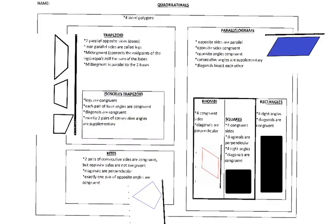Hopefully you've studied the different types of quadrilaterals in your core curriculum — this is just a review to organize that information. We have three main groups: trapezoids, kites, and parallelograms. A trapezoid has two parallel opposite sides called bases; the non-parallel sides are called legs. The midsegment connects the midpoints of the legs, equals half the sum of the bases, and is parallel to the two bases.